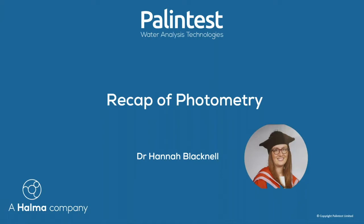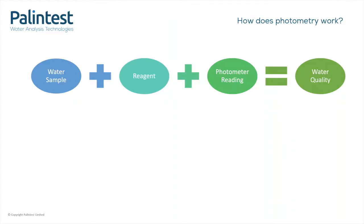Just to keep everyone on the same page, we'll start with a quick recap of how photometry works, and then we'll move on to the main meat of today's webinar. The basis of how a photometric test works is that you add reagent to your sample, they make it change colour, and then you read this colour change using a photometer, which will give you an idea of the water quality, and that's represented in that schematic at the top.